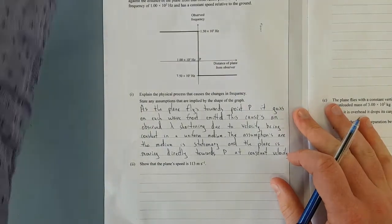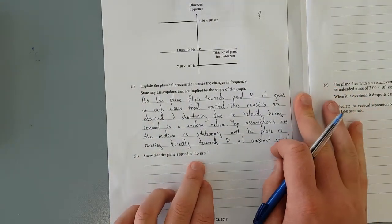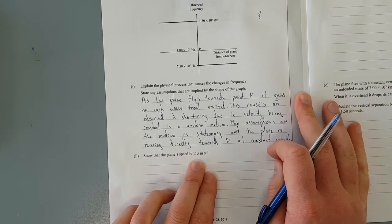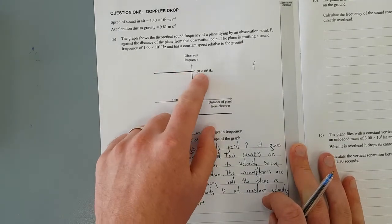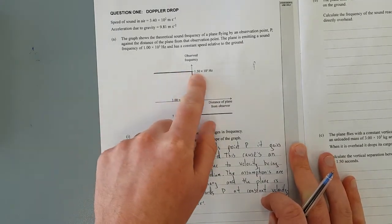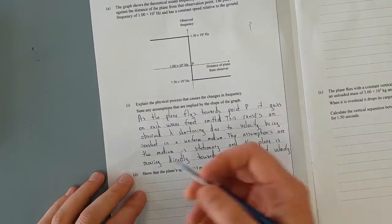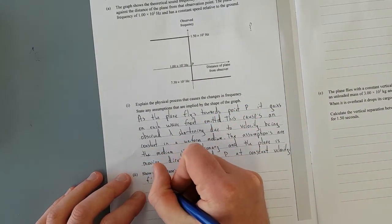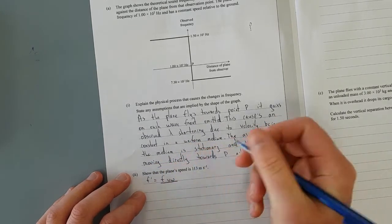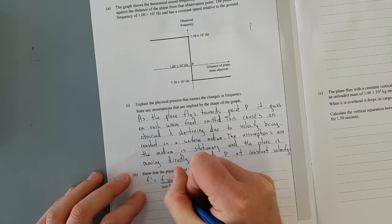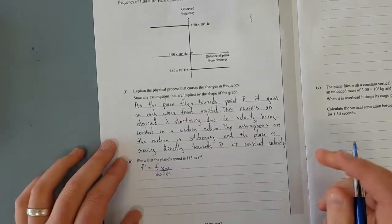Show that the plane's speed is 113 meters per second. So this is fairly straightforward. You have up here your observed frequency. Here is the observed frequency. Here is the emitted frequency. It's just the Doppler formula. So you've got F' equals F VW over VW plus or minus V source. This is the speed of the wave. And that Vs is the speed of the source.